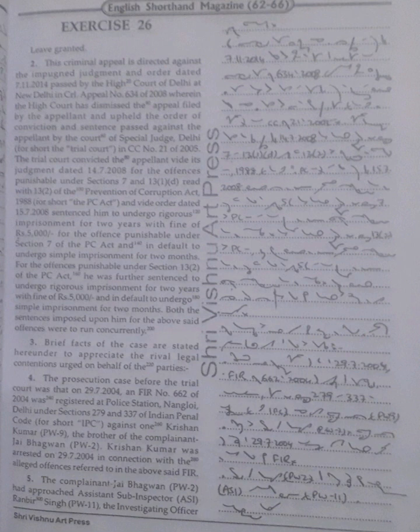21 of 2005. The trial court convicted the appellant vide its judgement dated 14 July 2008 for the offences punishable under sections 7 and 13(1)(D) read with 13(2) of the Prevention of Corruption Act 1988, for short the PC Act, and vide order dated 15 July 2008 sentenced him to undergo rigorous imprisonment for 2 years with fine of Rs 5000 for the offence punishable under section 7 of the PC Act and in default to undergo simple imprisonment for two months.